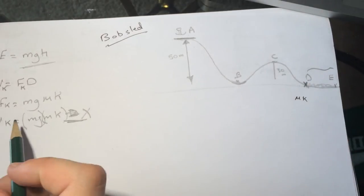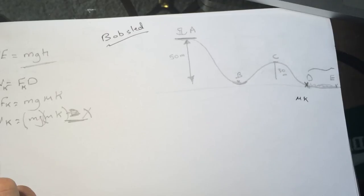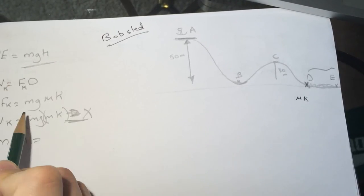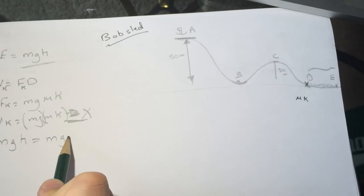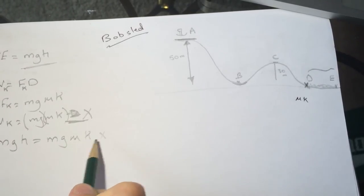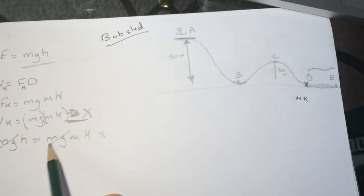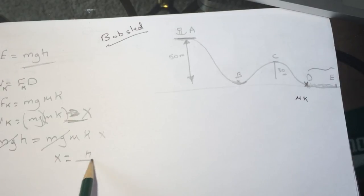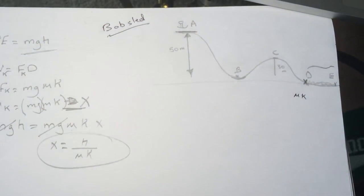MGH, let's set the potential equal to the work friction, equal to MG UK X. We can cancel the MG here and the MG from here, so the X that we want to find is H divided by UK. Hope to help and thank you for listening, bye.